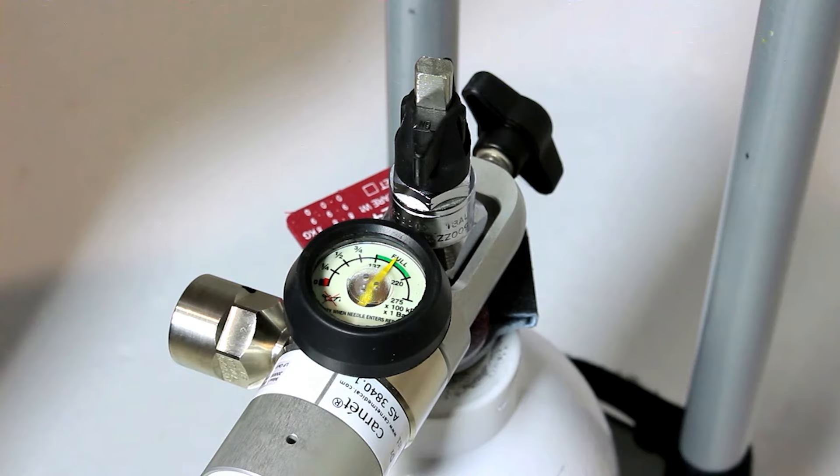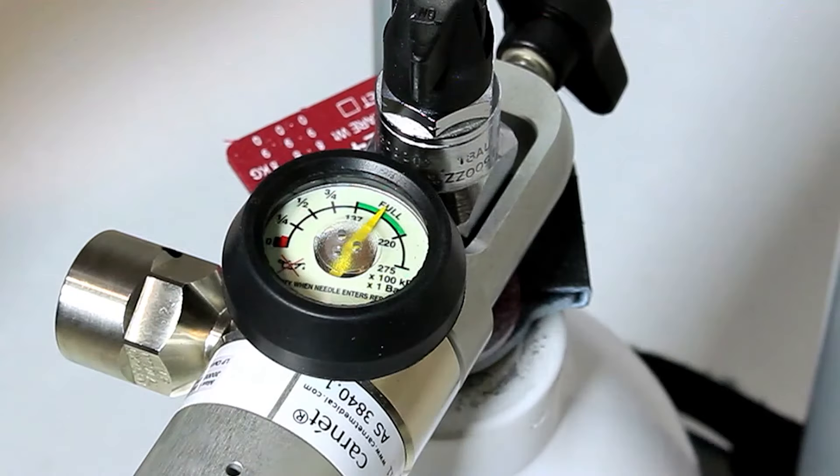For a new cylinder, the gauge level should read in the green full region. The gas indicator is usually marked in quarters. When you are using the gas for oxygen therapy, you should follow the protocol. Or if no protocol is in place, you should consider a replacement cylinder as the gas level approaches the red or left side.